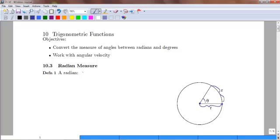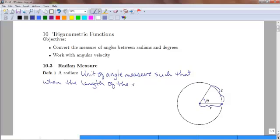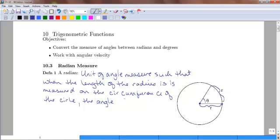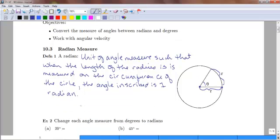So if we write down that definition, a radian is a unit of angle measure such that when the length of the radius is measured on the circumference of the circle, the angle inscribed is one radian. So this is our definition, that's where it comes from.